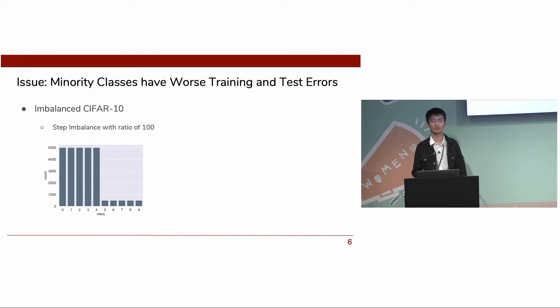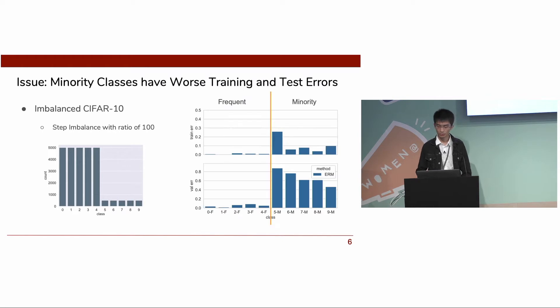As an illustration, we consider an imbalanced CIFAR-10 dataset here. We manually construct the dataset by removing 99% of the training samples for half of the classes. We train our ResNet32 model using ERM and get the following result. The upper figure is the plot for training error, and the lower figure is the plot for test error. We see that both the training and test performances on the minority classes are not good.